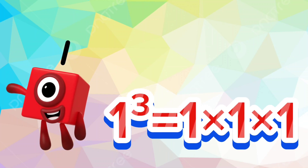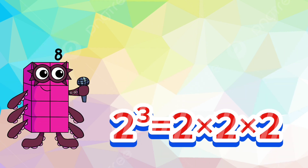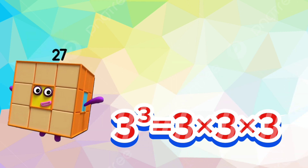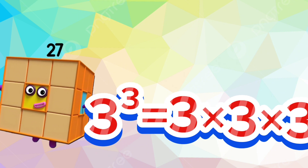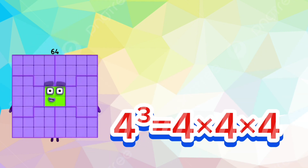One: one cube is one times one times one. Eight: two cube is two times two times two. Twenty-seven: three cube is three times three times three. Sixty-four: four cube is four times four times four.